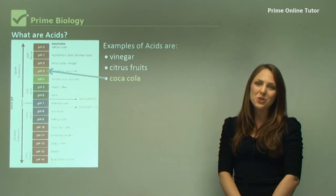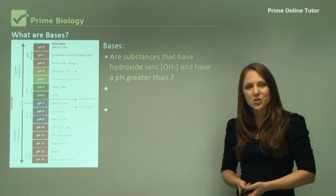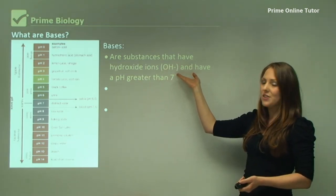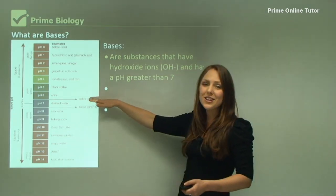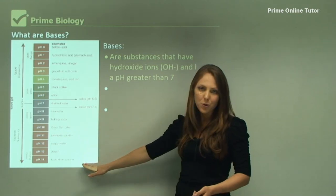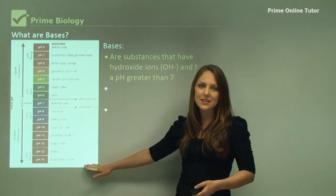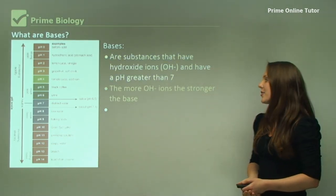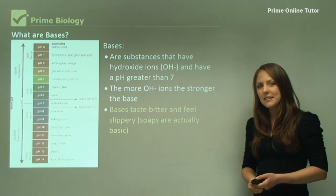Bases are substances that have hydroxide ions, or OH - O being oxygen, H being hydrogen - and have a pH of greater than seven. So again, seven is neutral but eight to 14, this one here, 14, is very very basic, so extremely strong. The more hydroxide ions, the stronger the base.